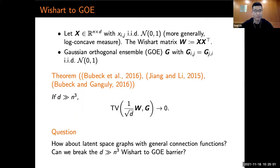Now let's get back to our latent space graphs. We're particularly interested in the question: how about graphs with general connection functions? Do the properties of the general connection function affect the dimension threshold for losing geometry? Can we break the n^(2/3) Wishart to GOE transition barrier?